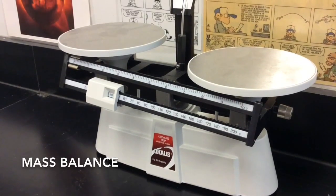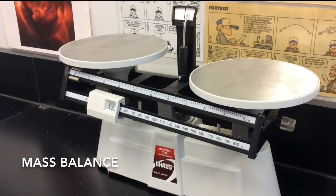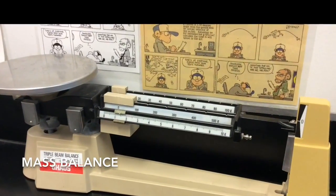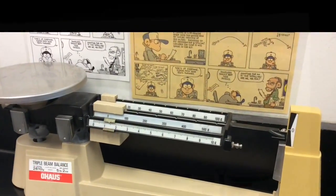This is a balance, not a scale, used for measuring mass. It's a double pan equal arm balance. This is a triple beam unequal arm balance also used for measuring mass.